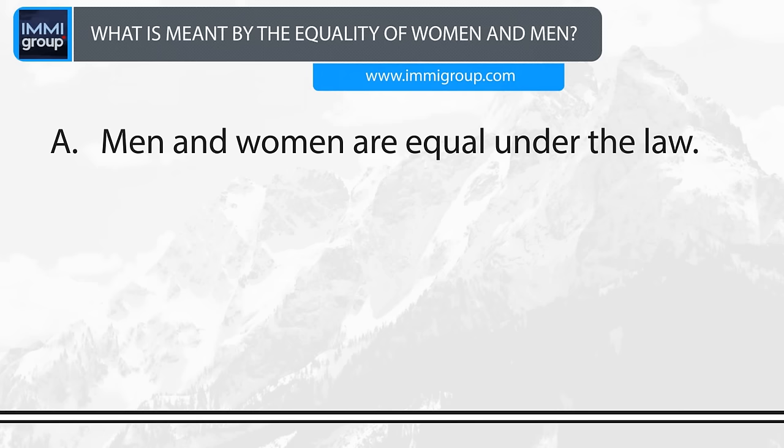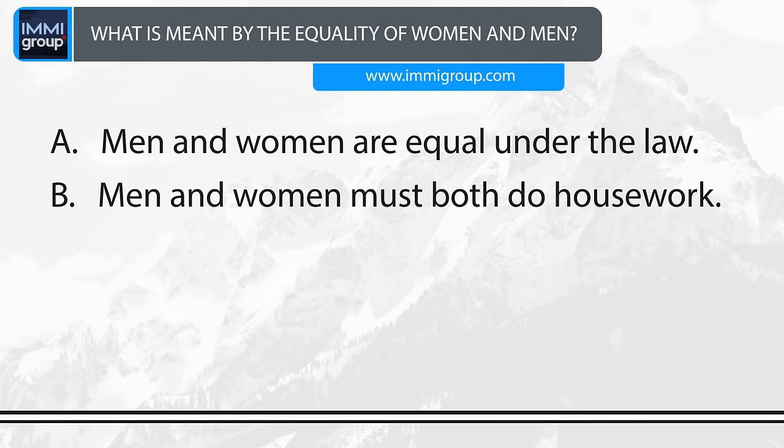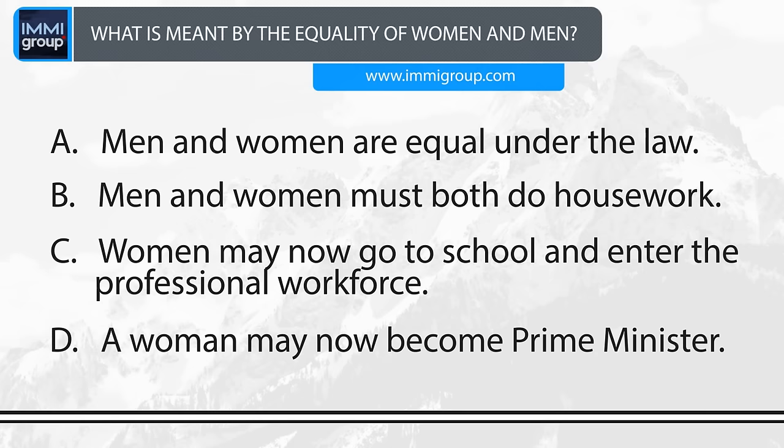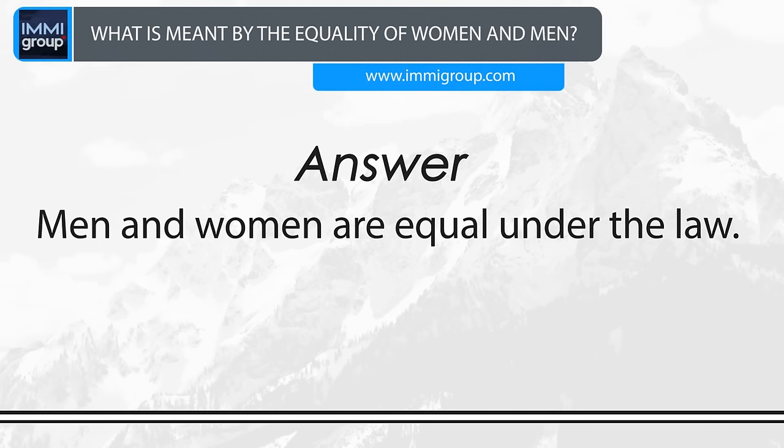What is meant by the equality of women and men? A. Men and women are equal under the law. B. Men and women must both do the housework. C. Women may now go to school and enter the professional workforce. D. A woman may now become Prime Minister. Answer: Men and women are equal under the law.